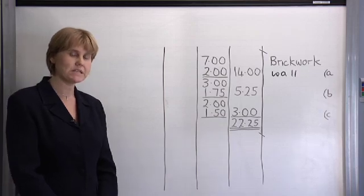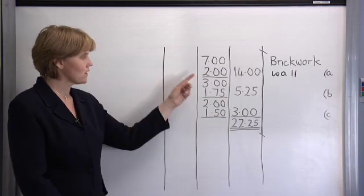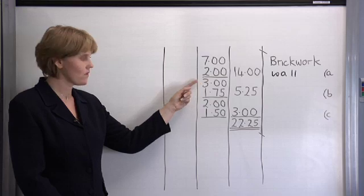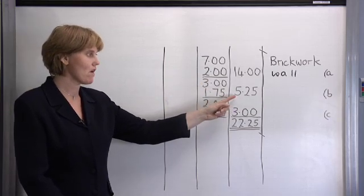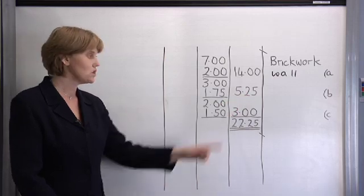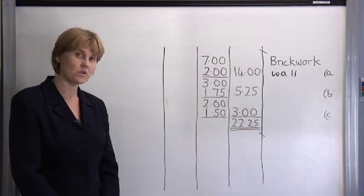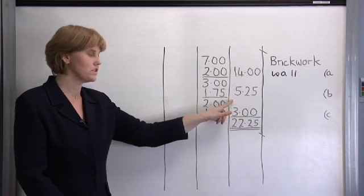Now let's look at the middle section of the wall. Three metres in length by 1.75 metres high gives us a total area of 5.25. Again, note the position and then note that there is no underlining.